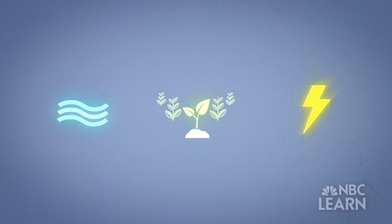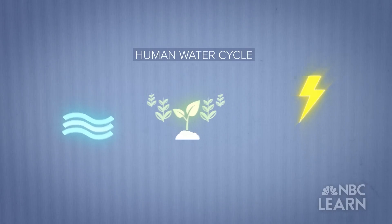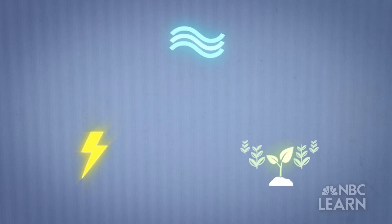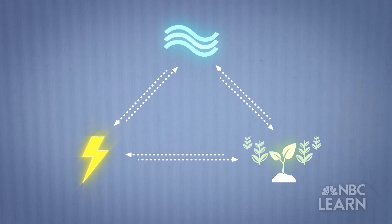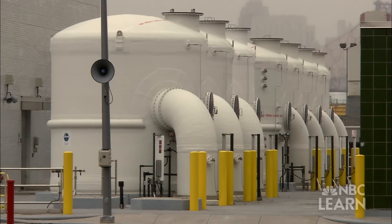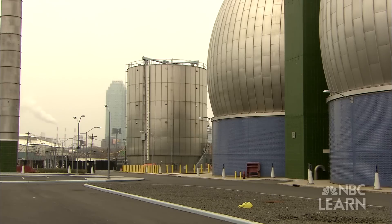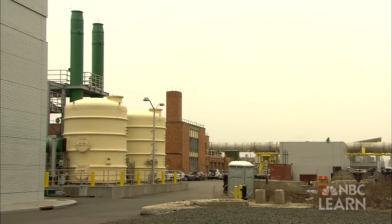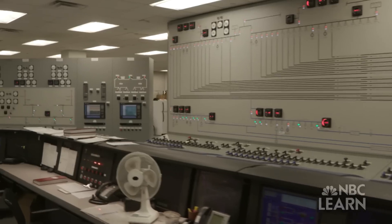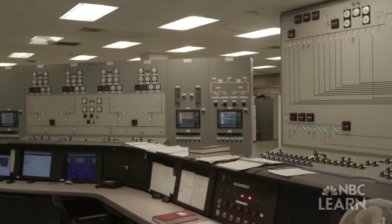Wastewater is one part of the human water cycle, which describes the many ways people interact with nature's hydrologic cycle to meet our needs for water, food, and energy. While water treatment plants are a necessary part of public health and environmental safety, they require a great deal of energy and resources to operate. In the US, we devote about 3–6% of the national energy budget on the enterprise of clean water.